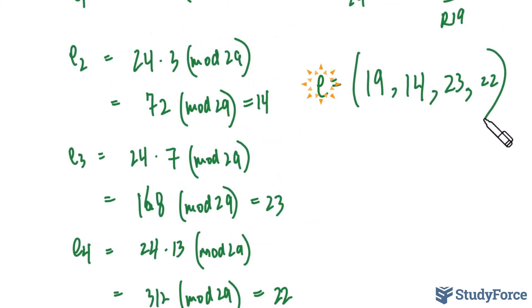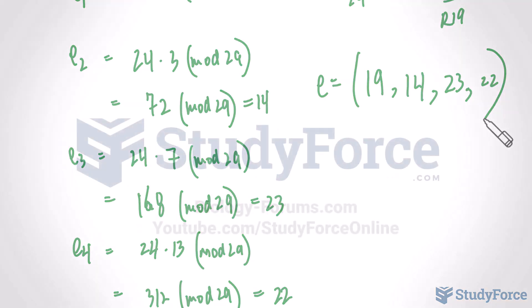What we have generated here, the sequence E, serves as our public key which will then be used to encrypt messages. In part 2 we'll look at how we can use this public key to encrypt a message, produce a cipher text, then decrypt it back using our private key. Thank you for watching.